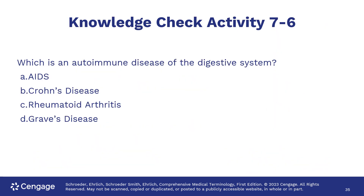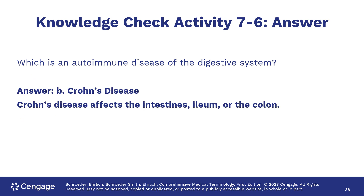What is an autoimmune disease of the digestive system? Crohn's disease, which can affect anywhere in the small or large intestines.